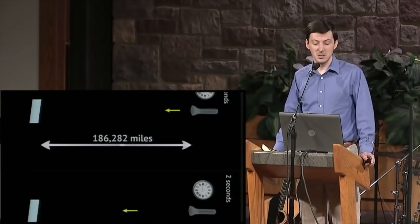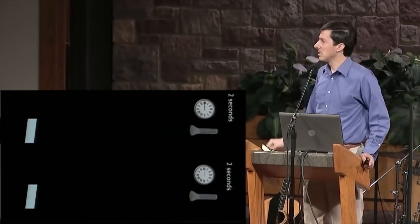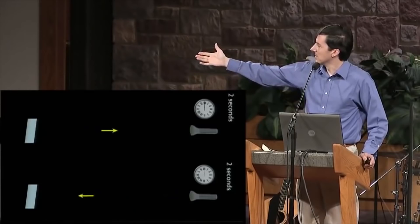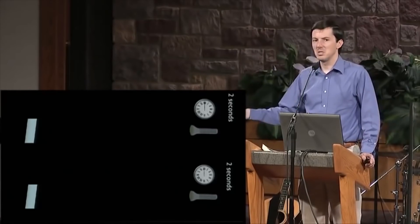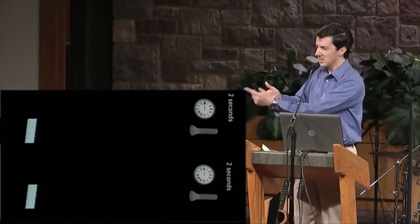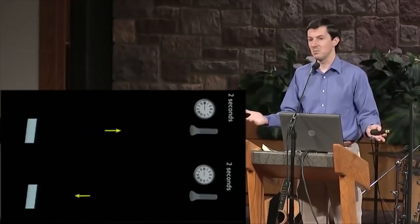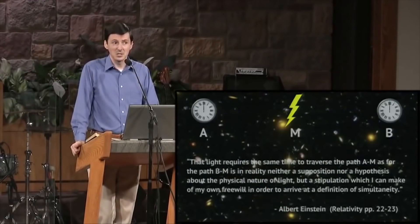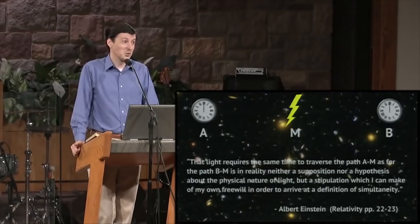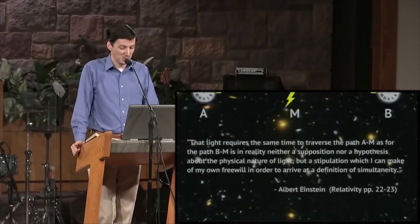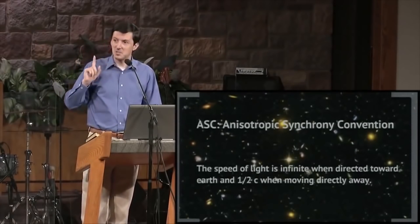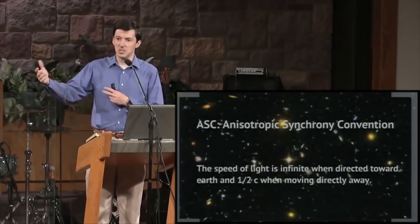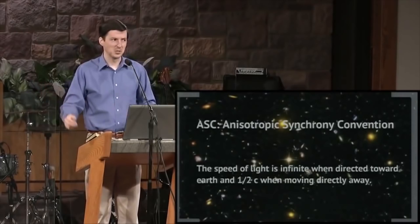If you haven't watched the original video, here's the context. Jason Lyle claims that light travels at 0.5C away from the observer and at infinite speed toward the observer. That makes the average round-trip speed C, which is consistent with all observations. This can't be proven wrong, he says, and even Einstein agreed that the one-way speed of light is merely a convention. We agree to treat it as being C in both directions, but we could just as easily agree to use Lyle's convention. This is absolutely correct. The problem isn't that what Lyle is saying is false.